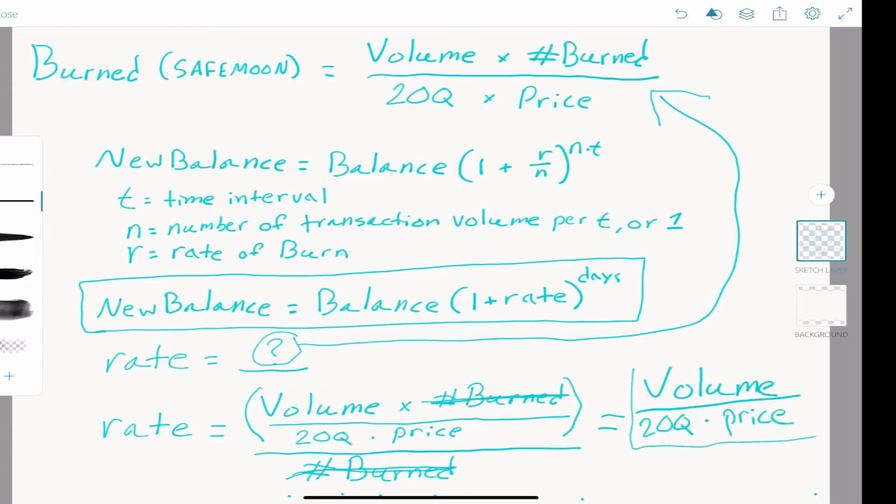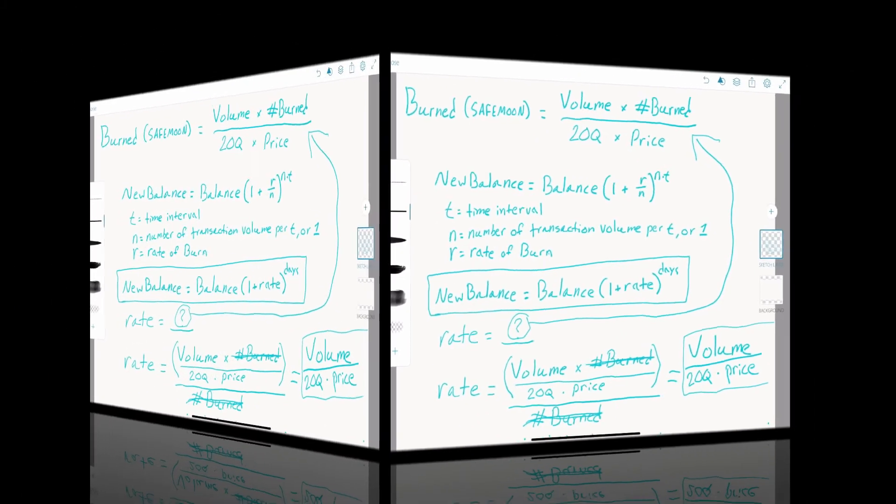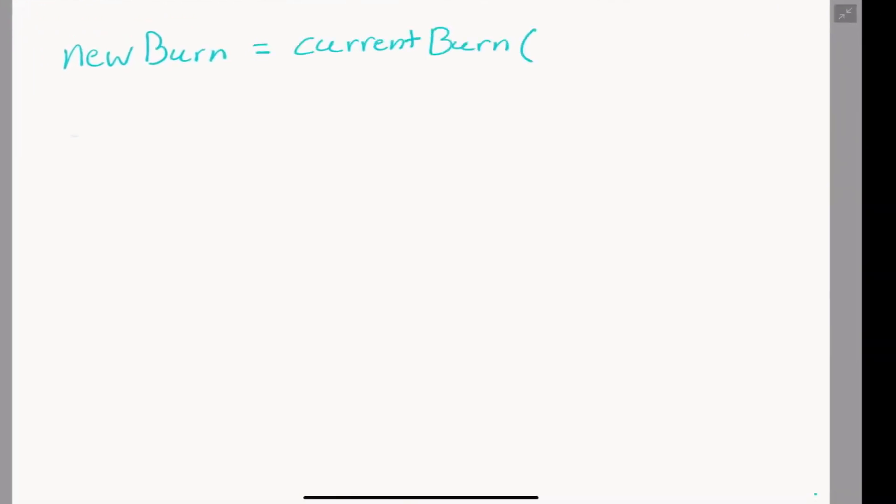Now we see that rate equals volume divided by 20 quadrillion multiplied by price. Let's substitute this back into our compound interest equation to see that new burn equals current burn times 1 plus volume divided by (20 quadrillion times price), all raised to the number of days.